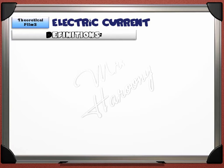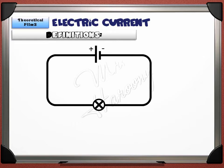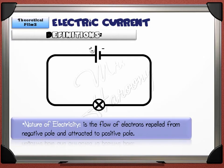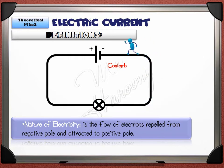Before we give the definition of electric current, there is an important thing we have to know: what is moving inside the wire. The real things that move in the wire are the negatively charged electrons that move from the negative pole to the positive pole of the battery. The nature of electricity is the flow of electrons repelled from the negative pole and attracted to the positive pole. But when we explain the concept of electric current, the columns were shown as moving from positive to negative.